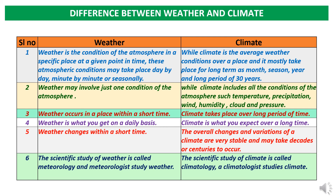Weather occurs in a place within a shorter time — like minute to minute, day by day, hourly, or seasonally — while climate takes place over a long period as a summation of weather conditions. Weather is what we get on a daily basis, but climate is the condition of the weather we expect over a long time. Weather changes within a short time, while overall changes and variations of climate are very stable and may take decades or centuries to occur. The timeline has been fixed at 30 to 31 years to get the climatic pattern of a region.